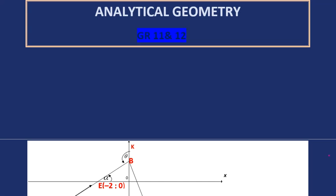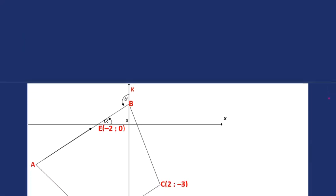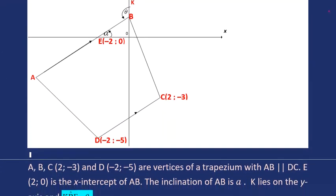Welcome to analytical geometry. This video is for grade 11 and grade 12. We're given a trapezium with vertices ABCD and E as a point on AB. We're also told that AB is parallel to DC, the angle of inclination on line AB is alpha, and we've got theta at KBE.